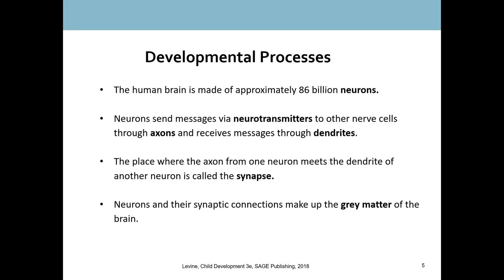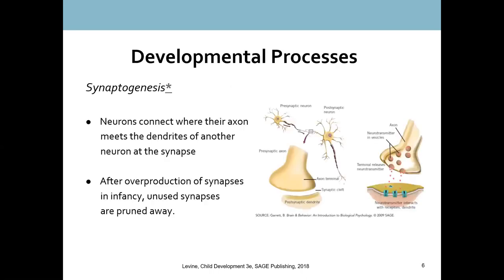Going down to the cellular level, the human brain is made up of approximately 86 billion neurons. Neurons are specialized communication cells — your brain and your whole nervous system are full of them. Neurons send messages via neurotransmitters to other nerve cells through axons, and they receive messages through dendrites. Looking at the picture, we can see a presynaptic and a postsynaptic neuron. They communicate across an area called the synapse — where the two neurons come very close together with only a small gap between them — and that is where they communicate with neurotransmitters.